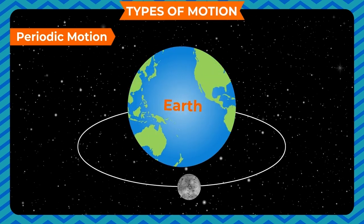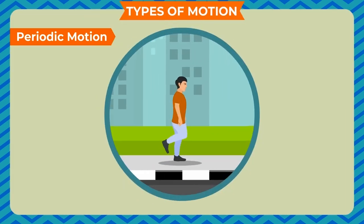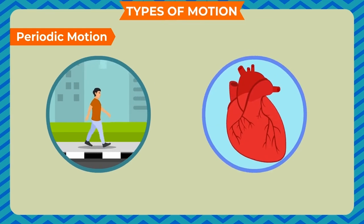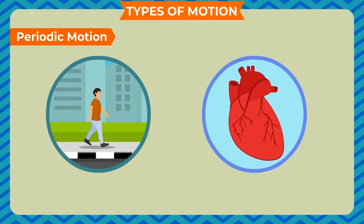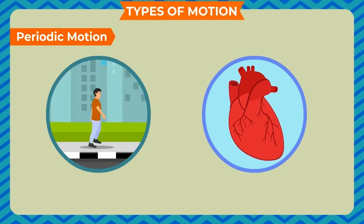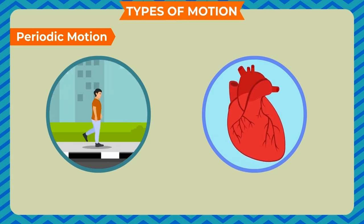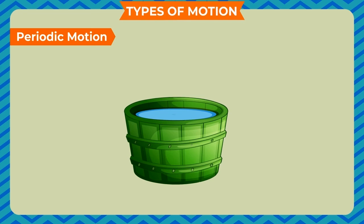Some types of repetitive motion — for example, swinging of your arms while walking or beating of your heart — are repetitive but not periodic. This is because the interval of time after which the motion is repeated is not always the same. If you drop a stone into a bucket full of water, it creates disturbance in the water level and waves. These waves continuously propagate towards the rim of the bucket and disappear at the rim — these waves are said to have circular motion.